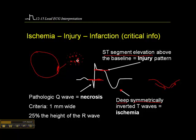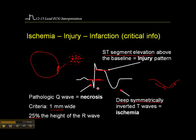The cells become increasingly permeable and edematous — they start to fill with fluid — and we see ST segment elevation above the baseline. Over time, if the cells continue to be ischemic and injured, they develop patchy areas of necrosis, which is reflected on the ECG by pathological Q waves. The criteria for pathological Q waves is that they must be at least one millimeter wide, and the depth of the Q wave must be 25% of the height of the R wave. Whether we're looking at symmetrically inverted T waves, ST elevation, or pathological Q waves, we have to see it in at least two anatomically contiguous leads.